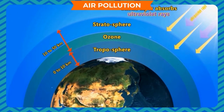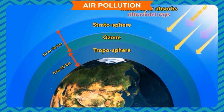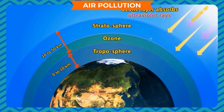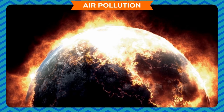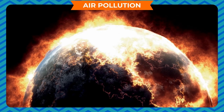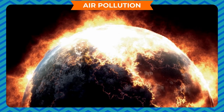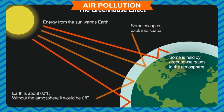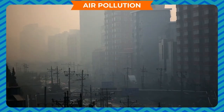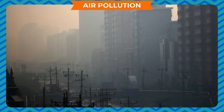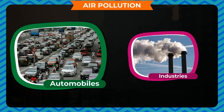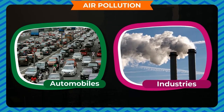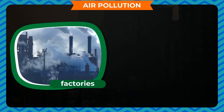Air pollution also causes ozone layer depletion. The increase in carbon dioxide in the atmosphere leads to the greenhouse effect, which increases the earth's surface temperature. The major sources of air pollution on the earth are automobiles, industries, factories, and burning of waste materials.